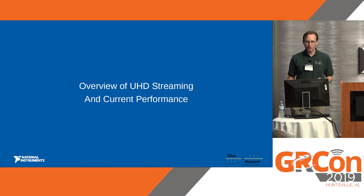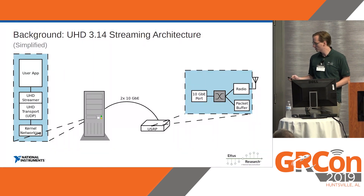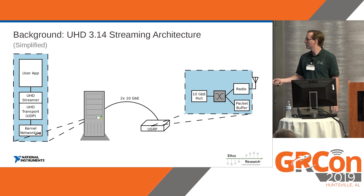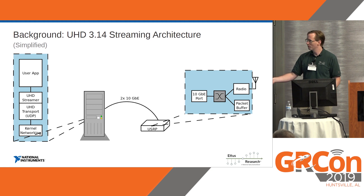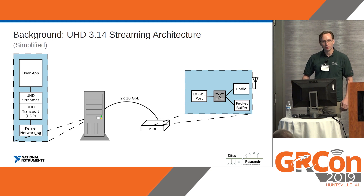So how does UHD currently work? Basically the architecture is like this: you've got your radio receiving data over 10 Gigabit Ethernet, and the application is sending it to the streamer APIs. There's a lower-level one where we get to transport, and we have to talk to the kernel to go over. Since transmissions are kind of bursty, we'll have a packet buffer to smooth that out, and the radio will consume it at a constant rate.